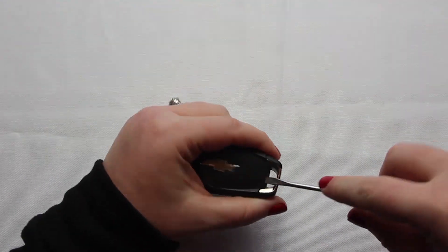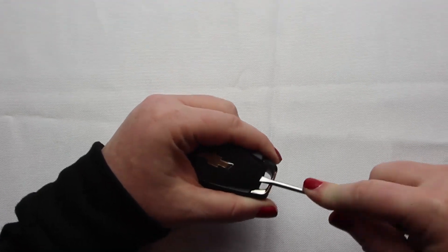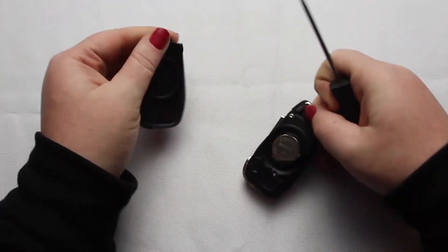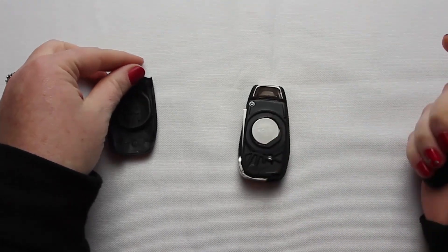Insert the screwdriver in the notch on the backside of the key fob and twist. Once you have the key fob open you'll see the battery is located here.